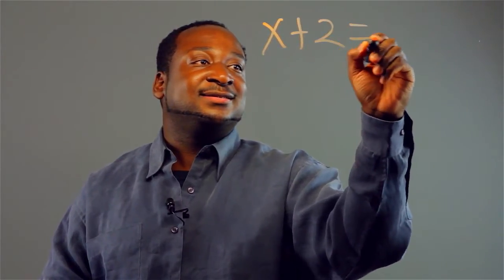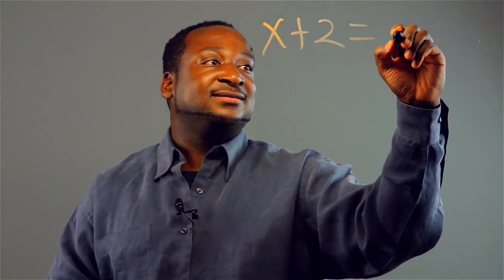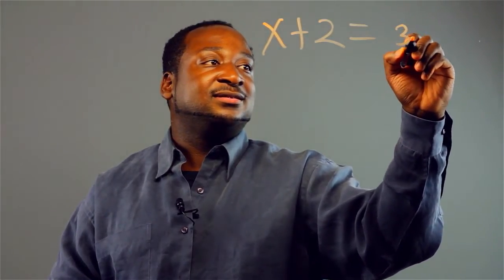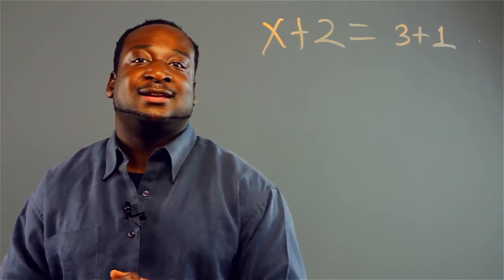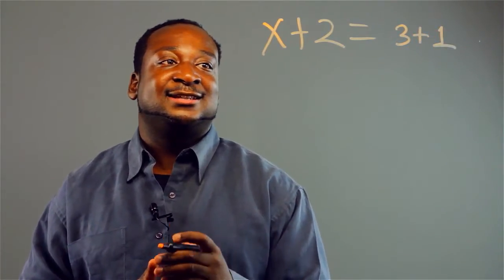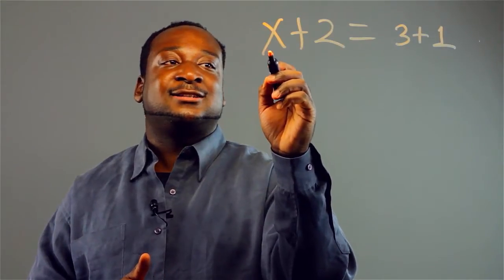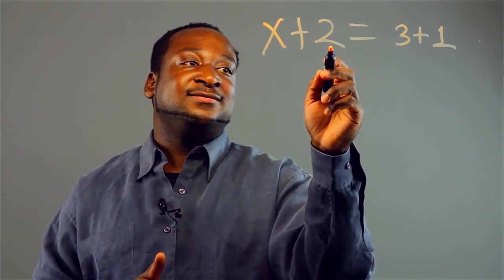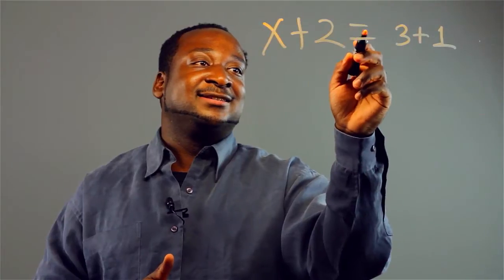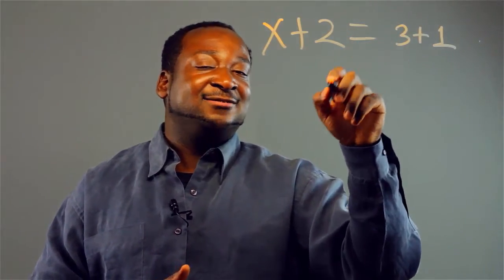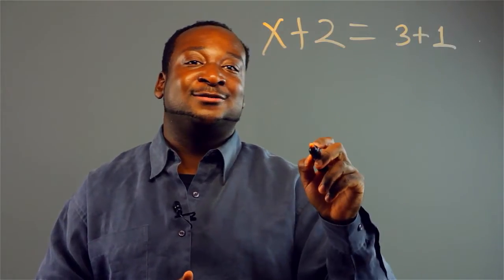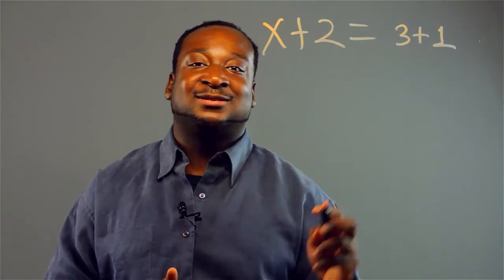Let's start off with the equation x plus 2 equals 3 plus 1. To read this: x plus 2 is equal to — whenever you see the equal sign, you read that as 'is equal to' — 3 plus 1.